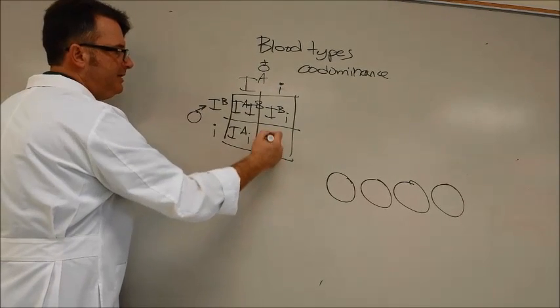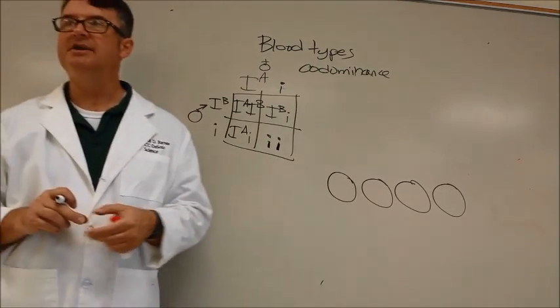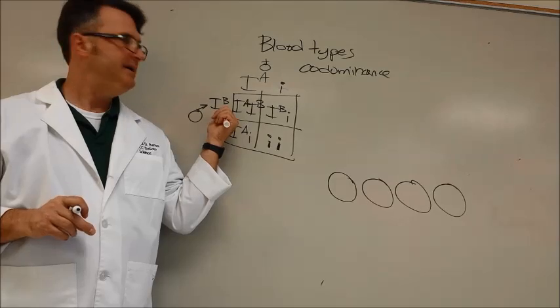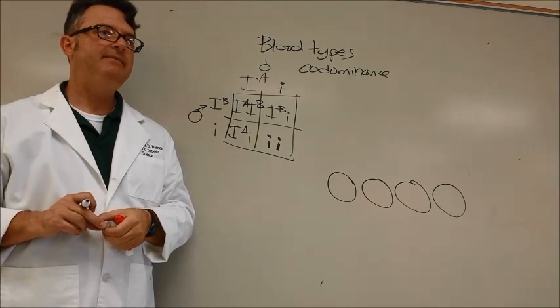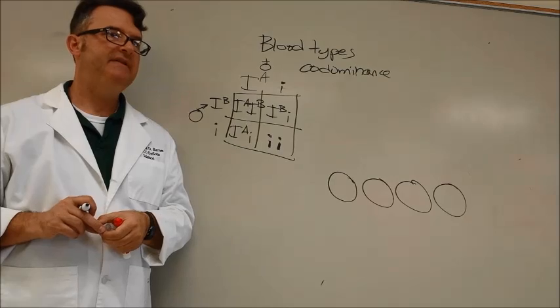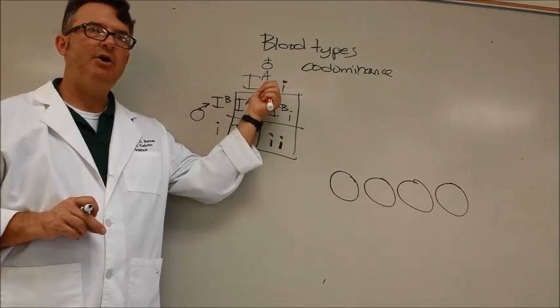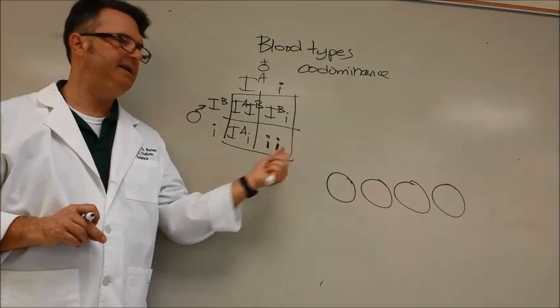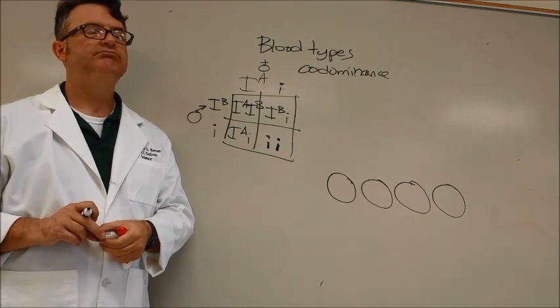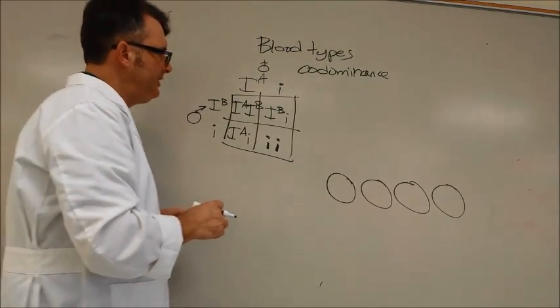And then what goes into this last square right here? What is I I? It's type O blood. So is it possible that you can have a type A mom and a type B dad and you could get a baby with type AB? Apparently a 25% chance that that could happen, one out of four. What about this? Could you have a type A mom and a type B dad and get an O? Yes, that's a possibility too.